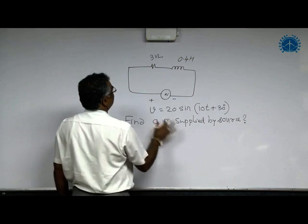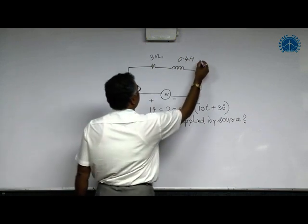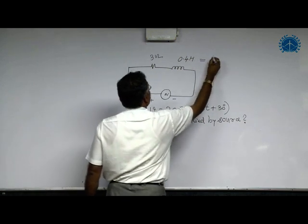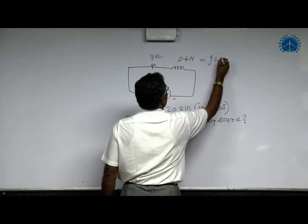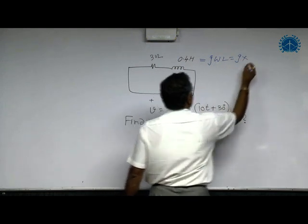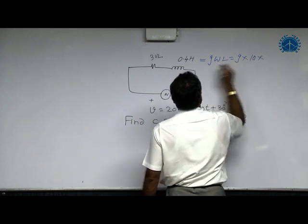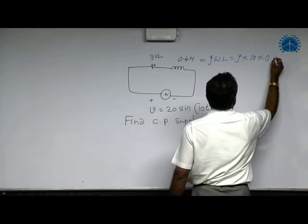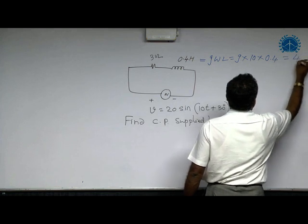To answer this, first find the inductive reactance, which is J omega L. J times omega is 10, L is 0.4, so it is 4J ohms.